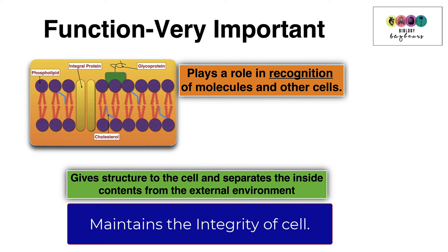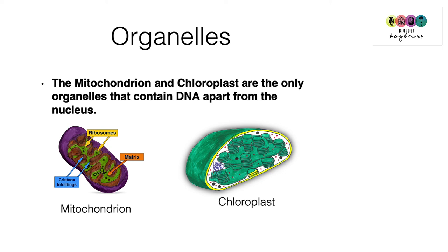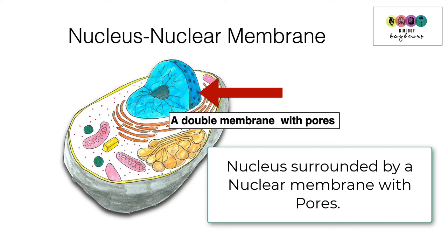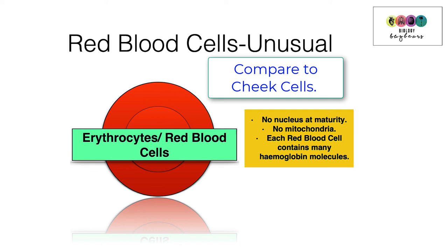A common exam question: where else in a cell would you find DNA apart from the nucleus? In an animal cell, you would find DNA in the mitochondrion as well. In a plant cell, you would find DNA in both the mitochondrion and the chloroplast. Another common question: where else would you encounter a membrane other than the cell membrane? The nucleus has its own membrane called the nuclear membrane.